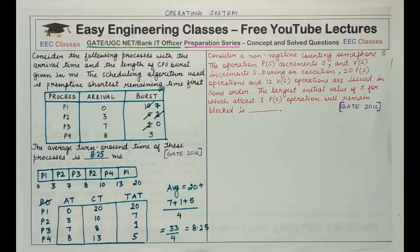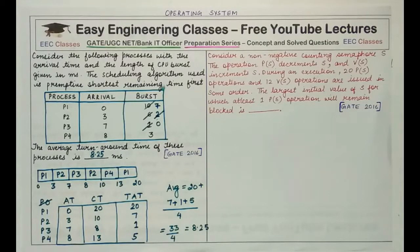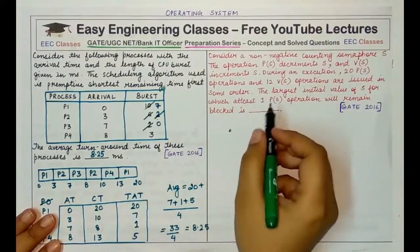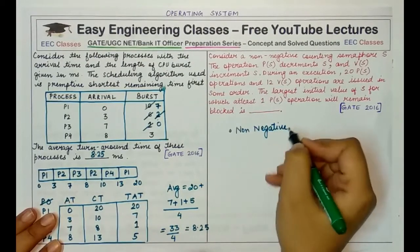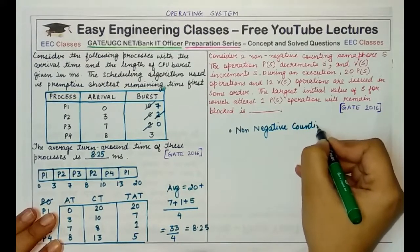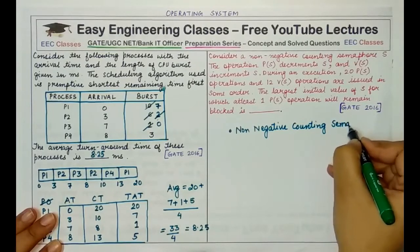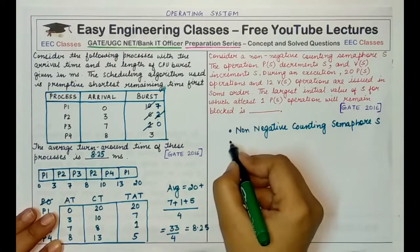The next question: consider a non-negative counting semaphore. The operation P(S) decrements the value of semaphore S and V(S) increments S. During an execution, 20 P(S) decrement operations and 12 V(S) increment operations are issued in some order. The largest initial value of S for which at least one P(S) operation will remain blocked is to be found. Since it is non-negative, you can only decrement while the value is positive.